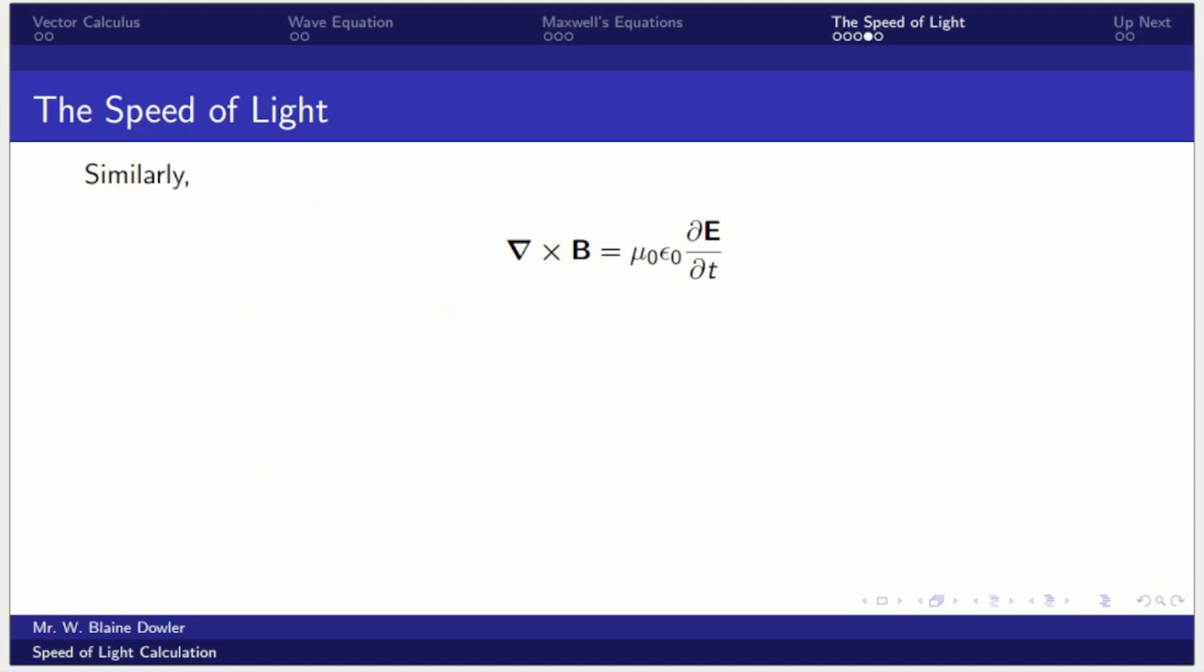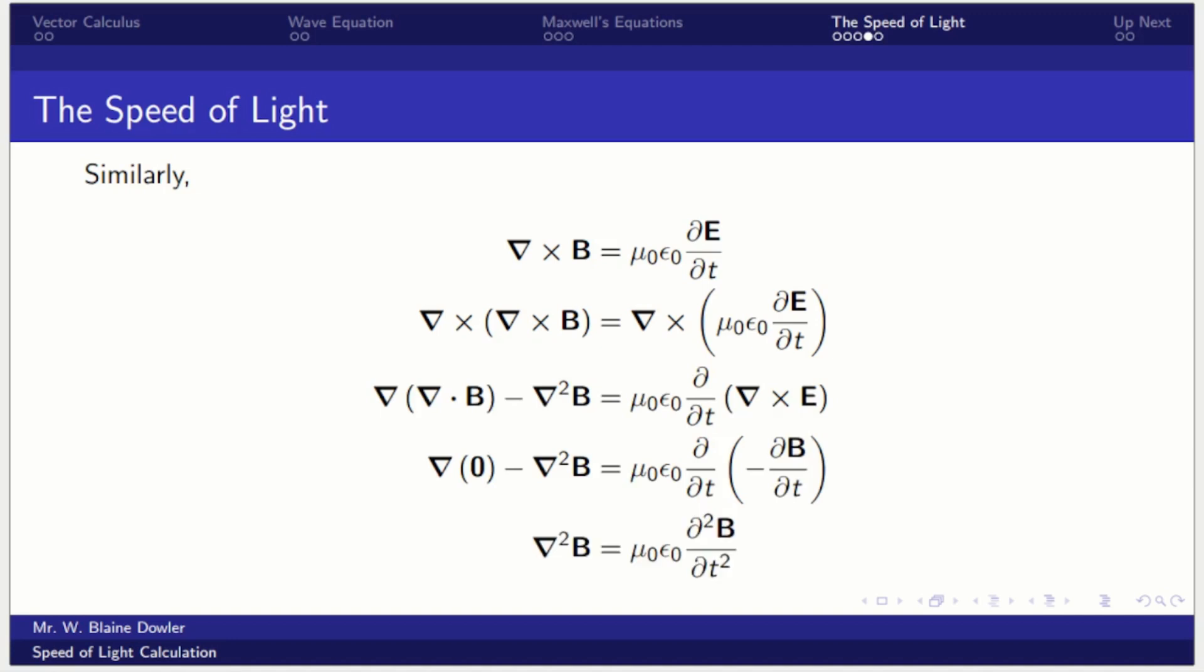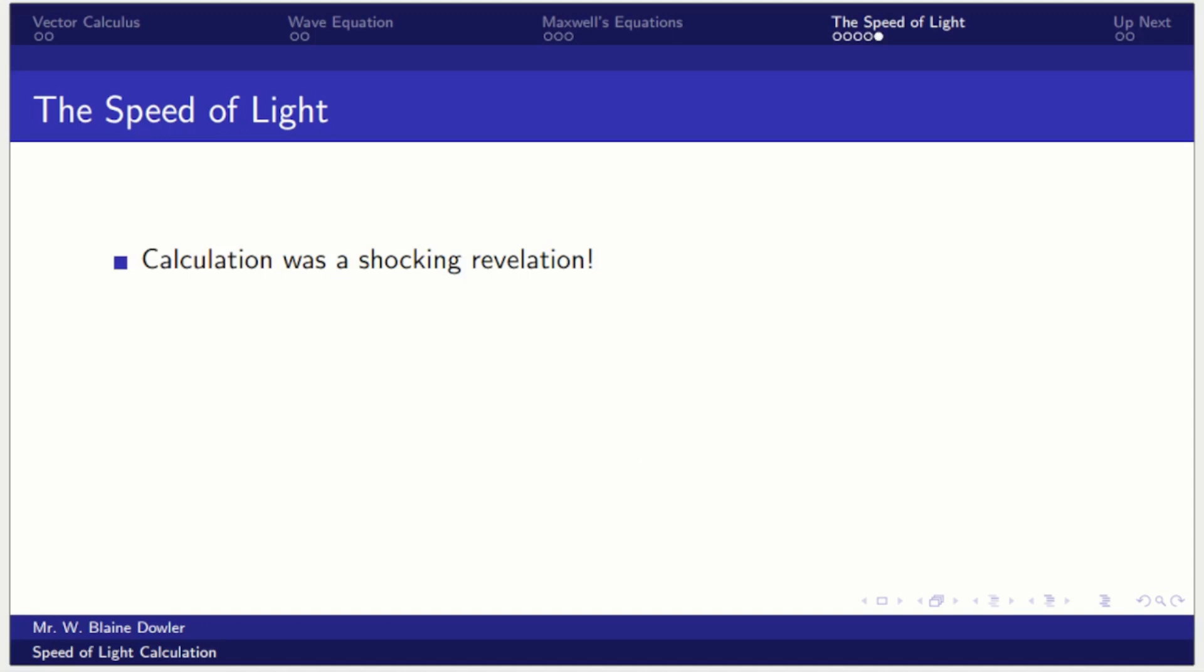Similarly, if we go through this starting with the curl of B, we can apply our identity and commute our differential operators, make our substitutions and simplifications, and we get exactly the same result: that magnetic waves would move at that exact same speed, one over the square root of μ₀ε₀. Now, this was a shocking revelation because Maxwell realized that a changing magnetic field produces an electric field and a changing electric field produces a magnetic field. So you could have electromagnetic waves that are propagating themselves. Part of the reason this was so shocking is that he was calculating the speed of electromagnetic waves. His intention was not to calculate the speed of light.